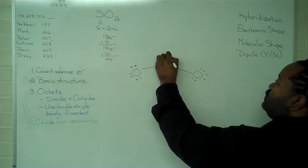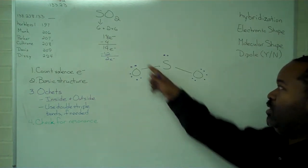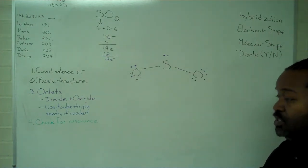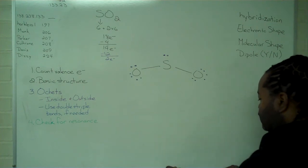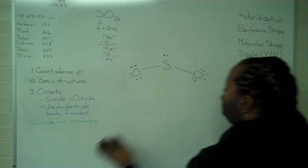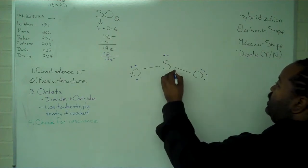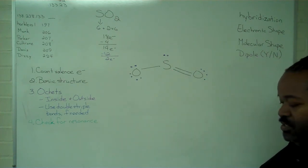If I place these 2 electrons on the sulfur, it's quick to confirm that while the oxygens have 8, sulfur only has 6. So in order to fix this, I'll have to use a double bond on one of the oxygens. And so I'll erase a pair there and replace it with this line here.